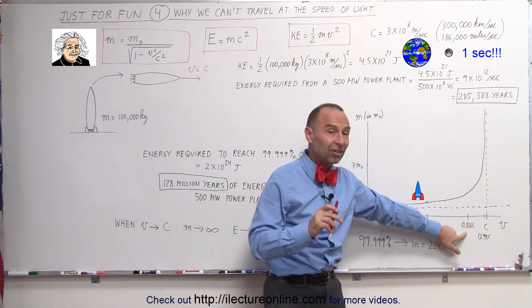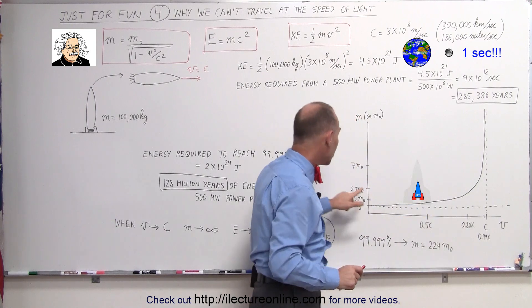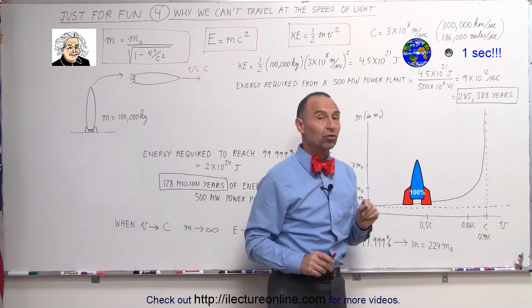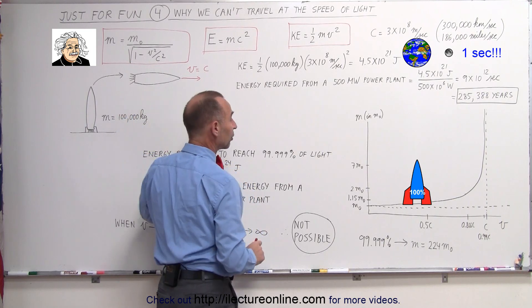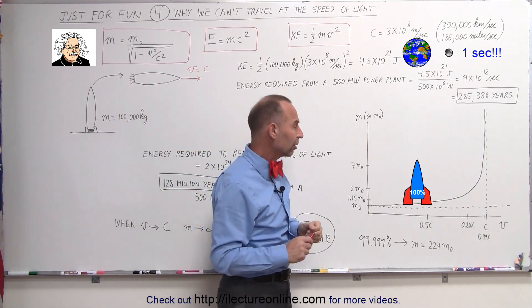By the time you get up to 86.6% of speed of light, you now have twice the mass that you started with. The spaceship will now have a mass of 200,000 kilograms instead of 100,000 kilograms.